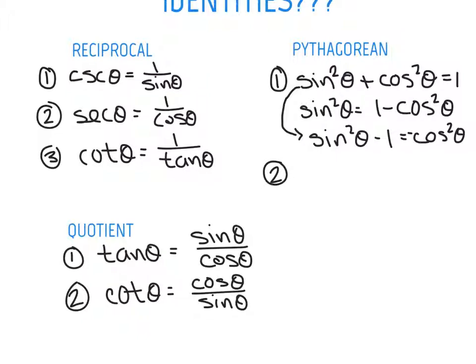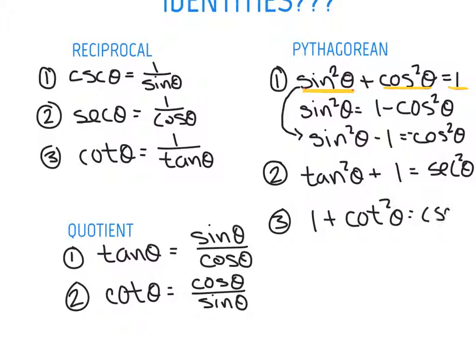Now, the other two Pythagorean identities are going to come from, what if I divided each term by cosine squared? Sine squared divided by cosine squared would make tangent squared. Cosine squared divided by cosine squared would make 1. And 1 divided by cosine squared would make secant squared. And last but not least, what if I divided this term by sine squared? That would make 1 plus cotangent squared equals cosecant squared. So that's a grand total of eight identities that we need to be comfortable with before we sit down for the exam.